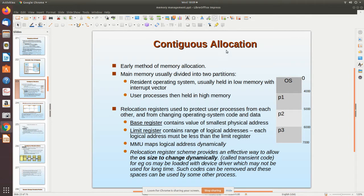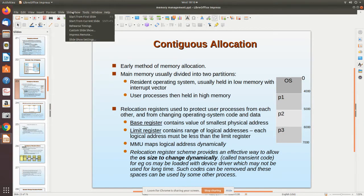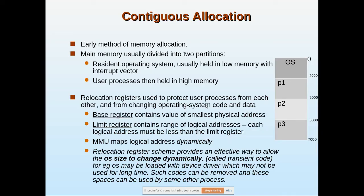In this video we are going to see contiguous allocation under memory management. Imagine this as main memory — in the lower part the operating system will be loaded, as it consists of a lot of interrupt vectors. Almost all operating systems will be loaded in the lower part of the memory, starting from zero. In the remaining space, processes will be occupied. Contiguous allocation is one of the early methods of main memory allocation.